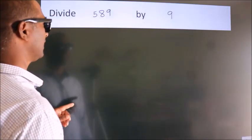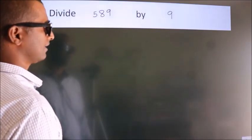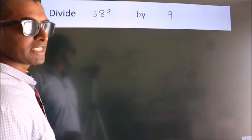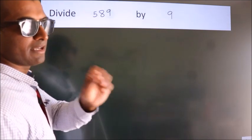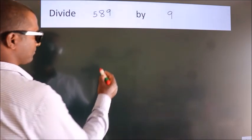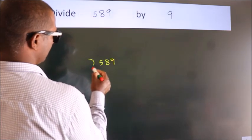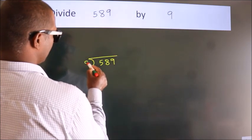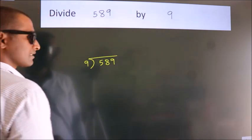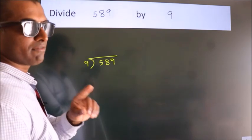Divide 589 by 9. To do this division, we should frame it in this way. 589 here, 9 here. This is your step 1.